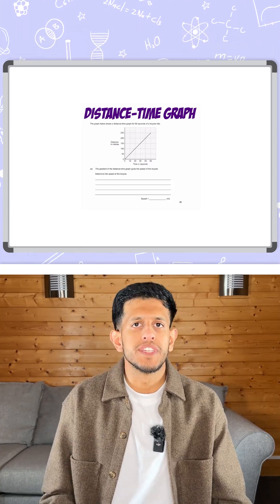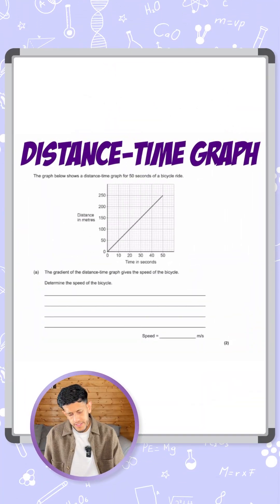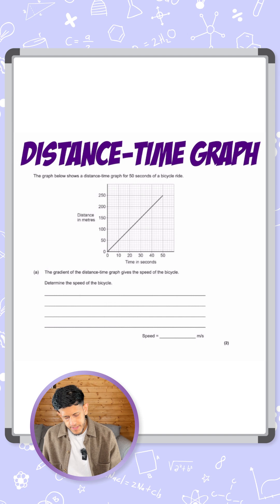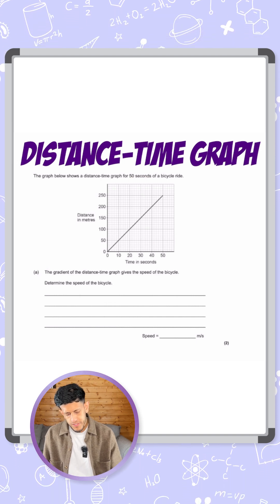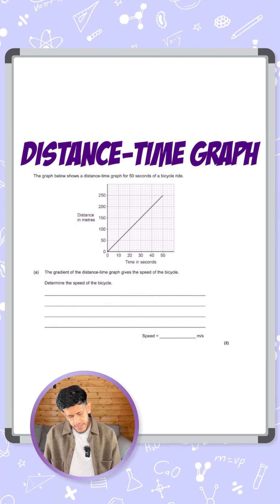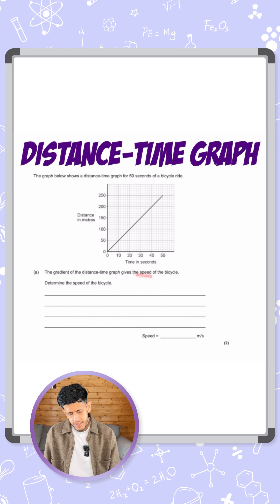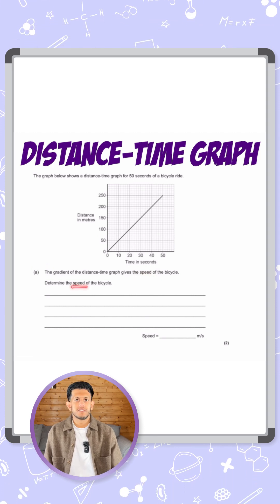So guys, let's take a look at this question on distance-time graphs. The graph below shows a distance-time graph for 50 seconds of a bicycle ride. The gradient of the distance-time graph gives the speed of the bicycle. Determine the speed of the bicycle.